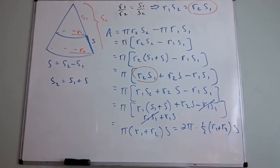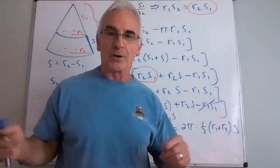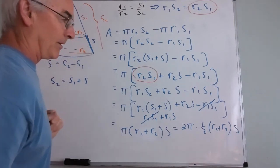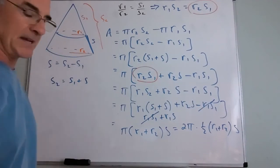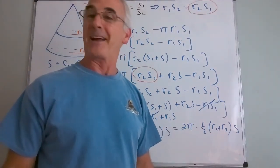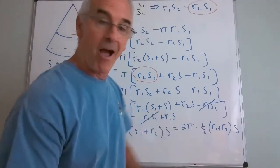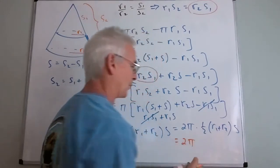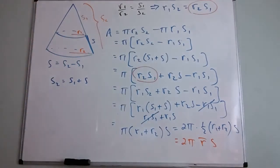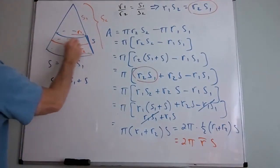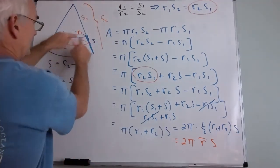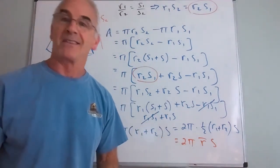Writing this as 2π · (1/2)(r₁ + r₂) · s — the reason for writing it that way is that one-half the sum of two things is their average. So the surface area of the frustum of a cone is 2π · r̄ · s, where r̄ is the average radius and s is the slant length. We've just figured that out.